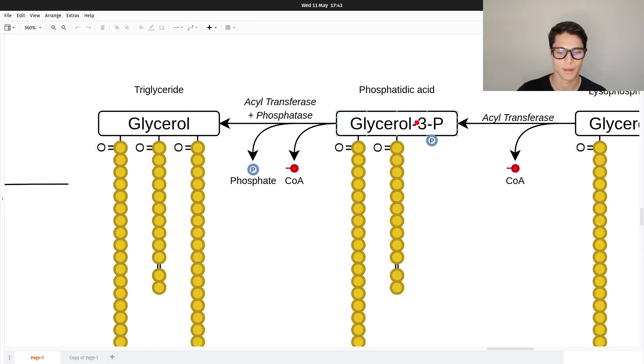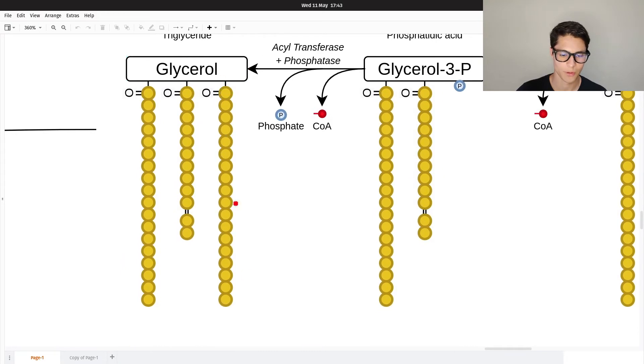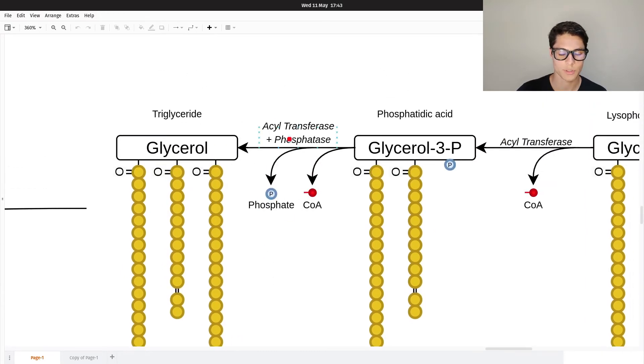Then another acyl transferase gets the third fatty acyl-CoA and we'll add it to the third carbon. In this process we also use a phosphatase to get rid of the phosphate, because if the phosphate is on carbon number three, the fatty acid cannot bind to it. So we get rid of the phosphate and then we add the fatty acid.